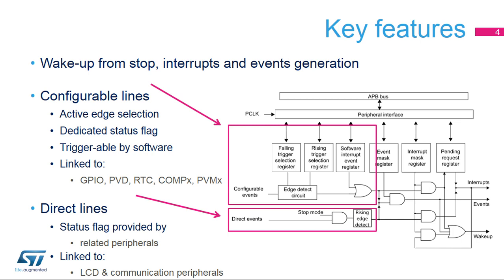Configurable lines allow the user to select which active edge generates interrupts or events, with a dedicated status flag for each line. Requests on configurable lines can also be generated by software. Configurable lines are linked with external interrupts from GPIO, comparators, PVD, RTC, and PVM.